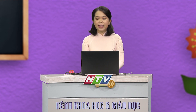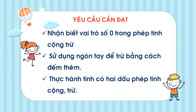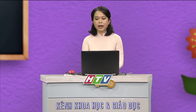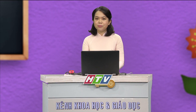Qua bài học ngày hôm nay sẽ giúp các em nhận biết vai trò số 0 trong phép tính cộng trừ, sử dụng ngón tay để trừ bằng cách đếm thêm, và thực hành tính có 2 dấu phép tính cộng trừ. Trước khi bắt đầu tiết học, các em chuẩn bị vở, bút và mở sách toán trang 71. Có rất nhiều điều thú vị đang chờ đón các em đấy. Các em sẵn sàng chưa? Chúng ta cùng khám phá bài học ngày hôm nay.